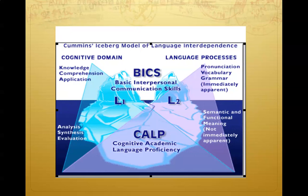This also shows Cummings' Common Underlying Proficiency Model, or CUP. The two icebergs you see on top are separate — that is, two languages are visibly different in outward conversation. Underneath the surface, the two icebergs are fused in such a way that two languages do not function separately. Both languages operate through the same central processing system, which again is the CUP.